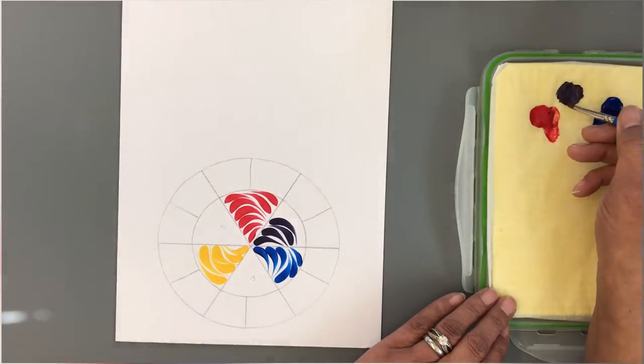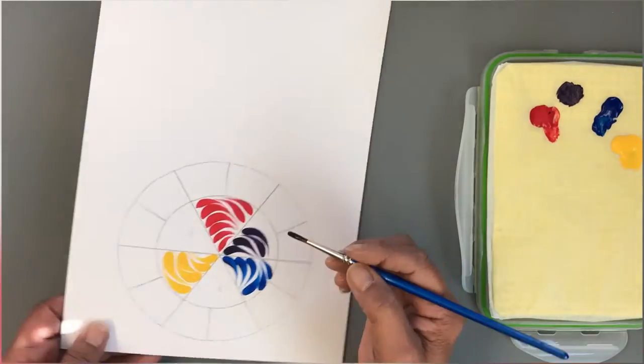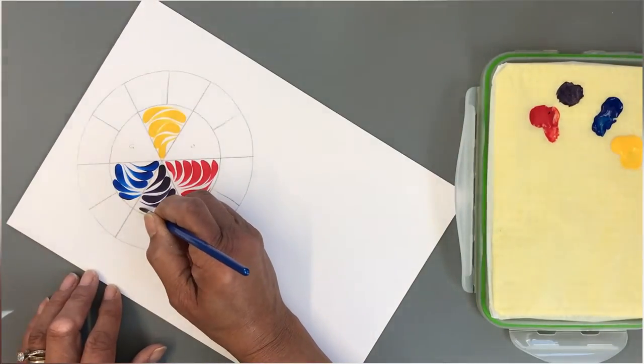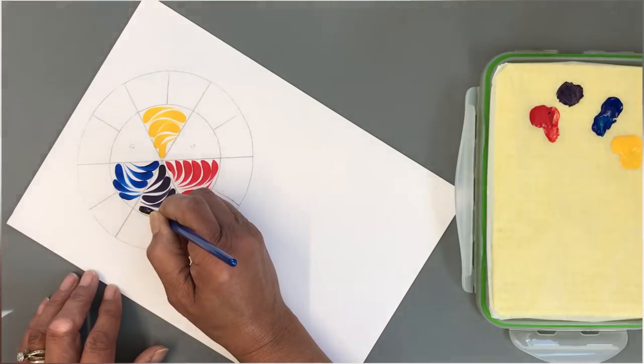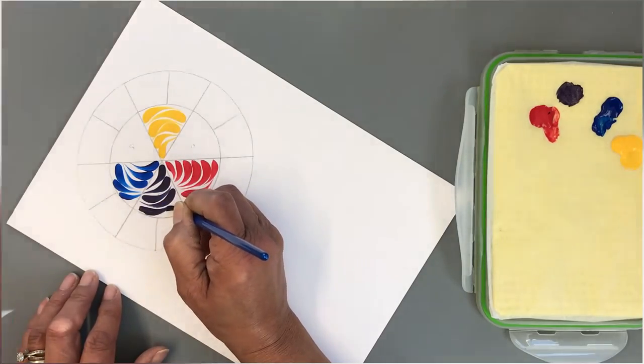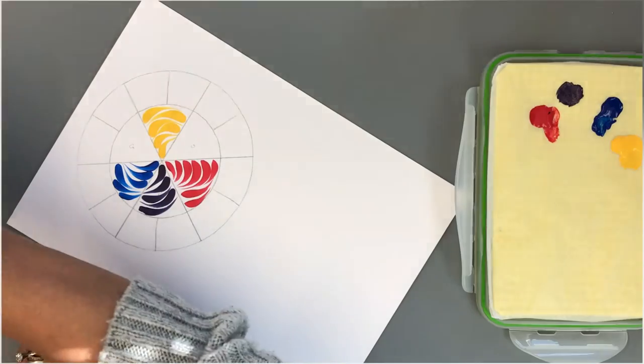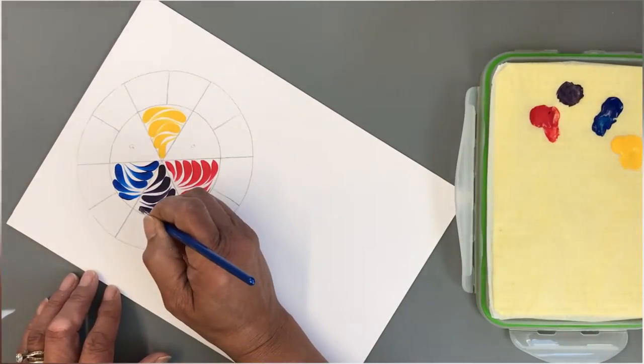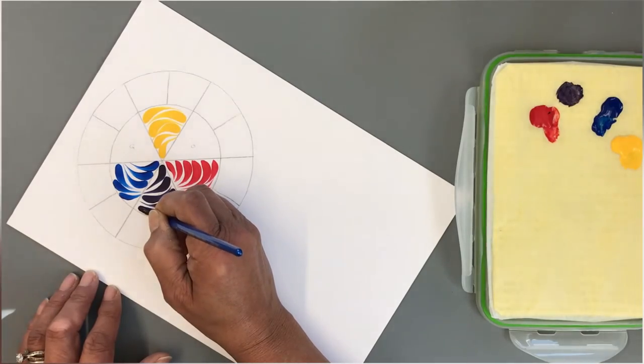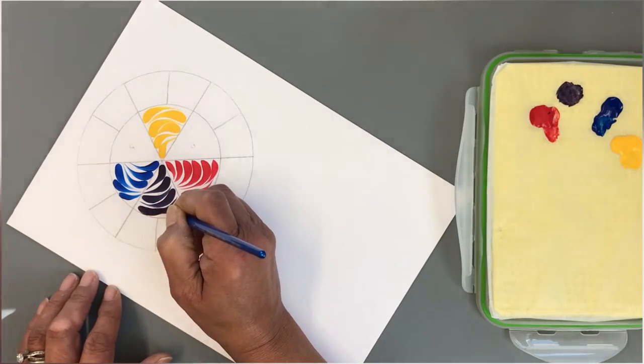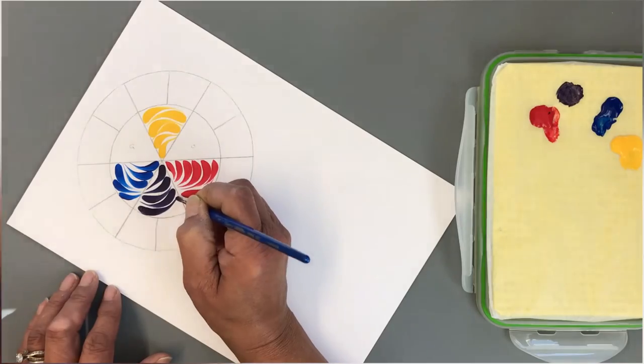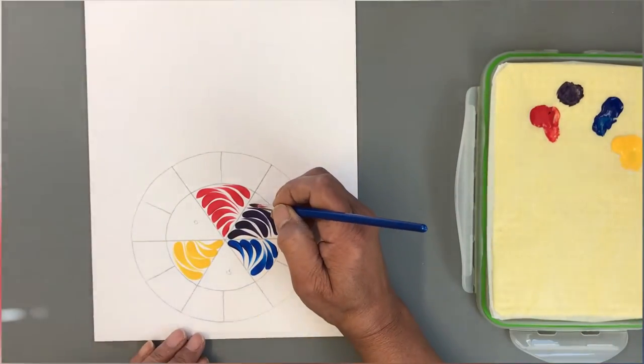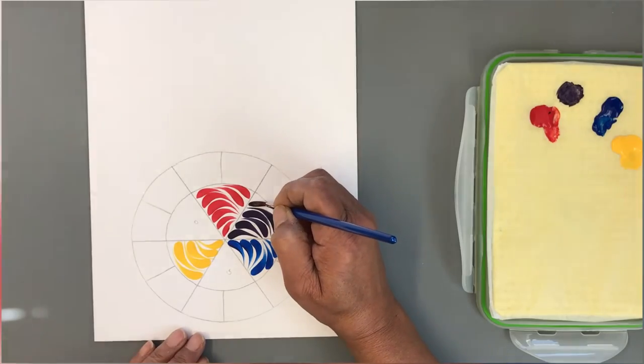I'm just going to use up what's there rather than making up any more. That wasn't a very good one. I'm going to add the teeniest bit of water to just get a little bit more paint out of that mix. And just go over that. So that is your purple.